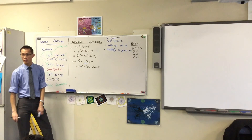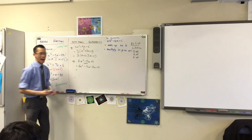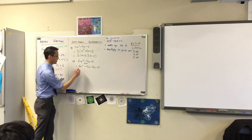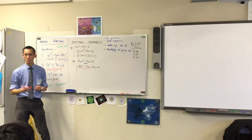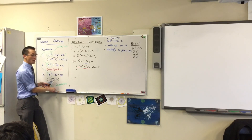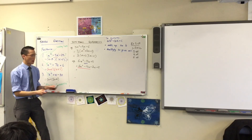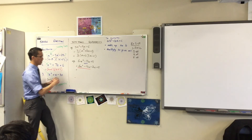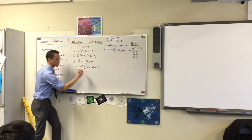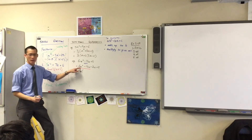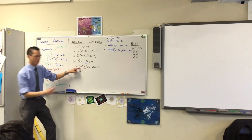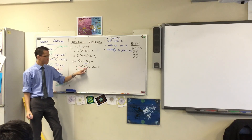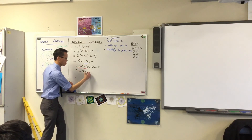Now we have pairs. Looking at the first pair — 3 and W are both common factors. I'll pull 3W out. What's left behind? 2W minus 5. And for this pair, what's left behind? Minus 1, leaving 2W minus 5 again.